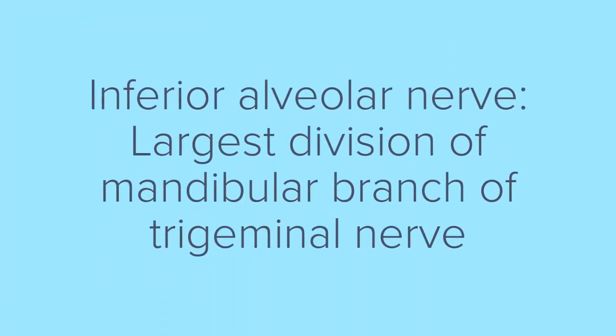The inferior alveolar nerve is the largest division of the mandibular branch of the trigeminal nerve. The trigeminal nerve, as you know, is the fifth cranial nerve. The mandibular branch, or the mandibular nerve, is both motor and sensory, and it is the largest division of the trigeminal nerve.